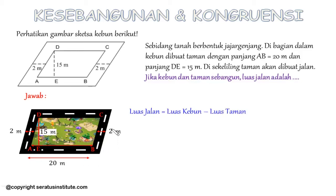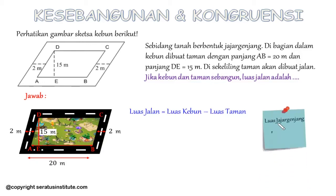Untuk menghitung luas jalannya, luas jalan sama dengan luas kebunnya dikurangi luas taman, yang sama-sama berbentuk jajar genjang. Masih ingat luas jajar genjang? Ya tepat sekali, luas jajar genjang itu rumusnya L sama dengan A dikali T. Diingat-ingat ya Sobat 100.